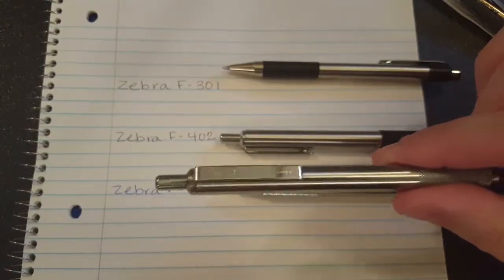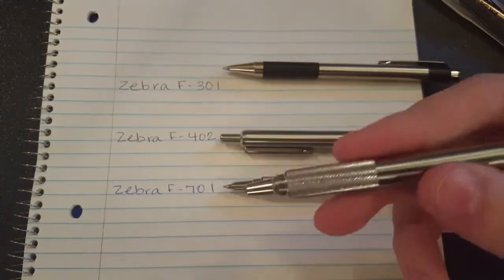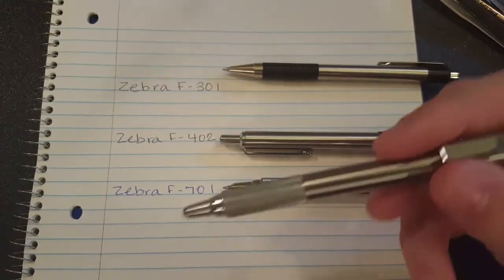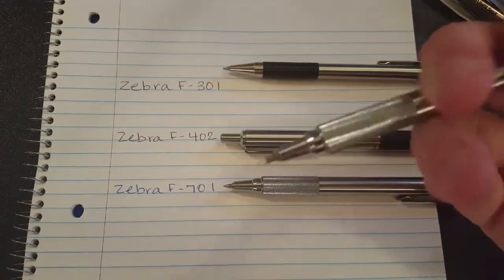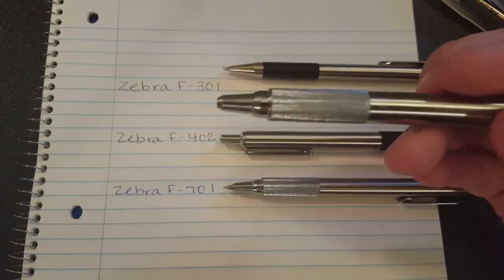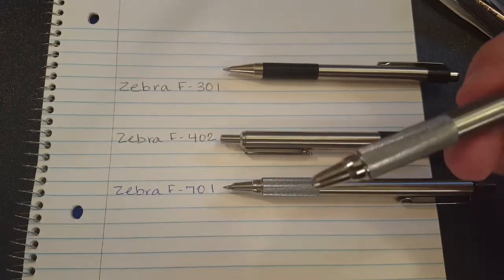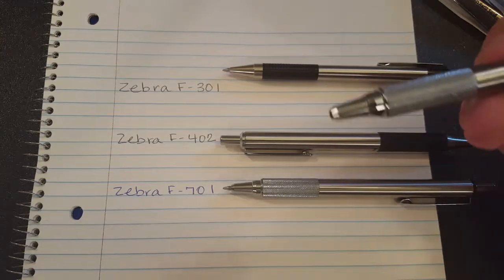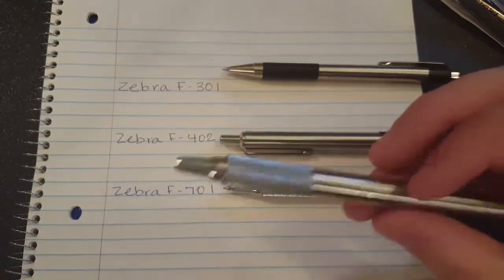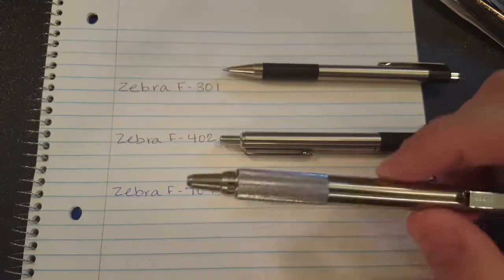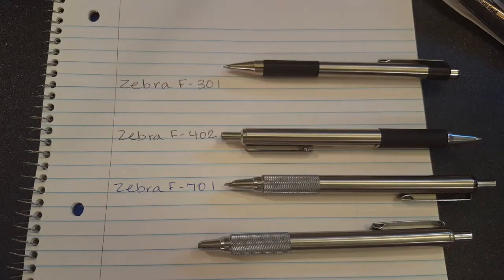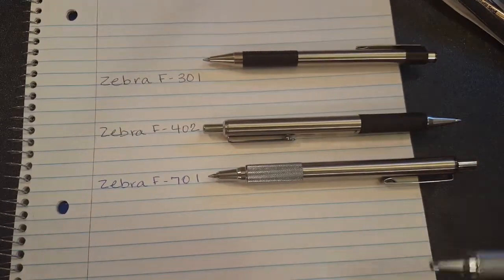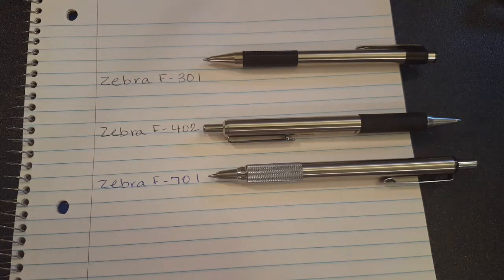The only benefit to having the Fisher cartridge is that it will write anywhere. The Fisher Space Pen cartridge will write upside down, it will write underwater, it will write in extreme cold and extreme heat. We haven't tested the Zebra cartridges in any of those conditions, but they're just a gravity-fed ballpoint so they won't write upside down other than the little bit of ink that starts on them. But unless you really need that, you're paying extra for a feature you're probably never using. And the tip is less fun to write with, arguably, than the Zebra tips.